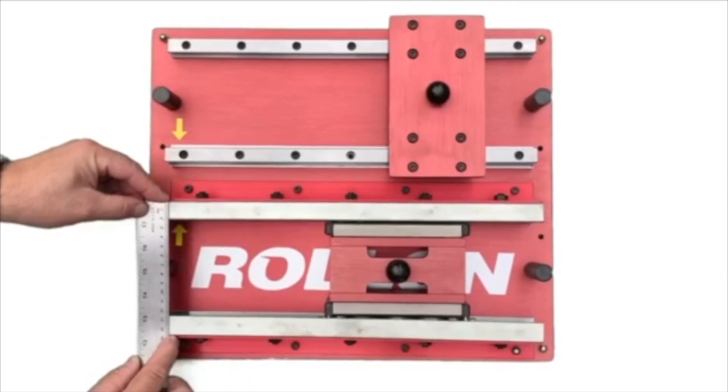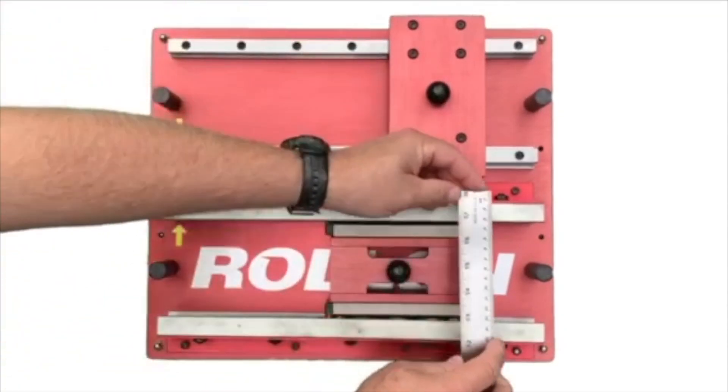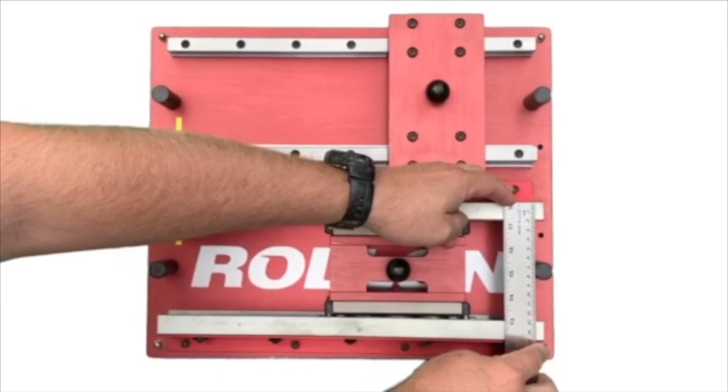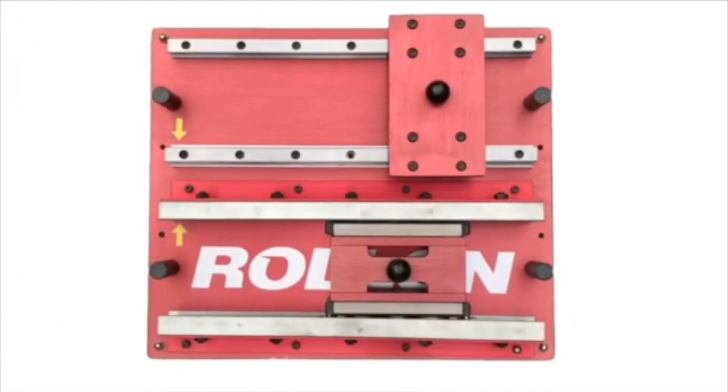Here we're seeing that we're measuring the rail which is 145 millimeters there and 149 millimeters there, allowing for parallelism misalignment of four millimeters.